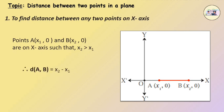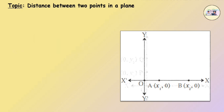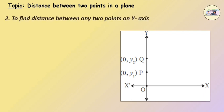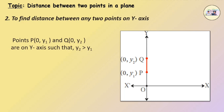To find the distance between two points on the y-axis: in the given figure, points P and Q are on the y-axis such that y2 is greater than y1. Therefore, the distance of PQ is equal to y2 minus y1.